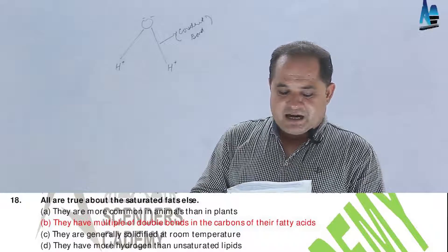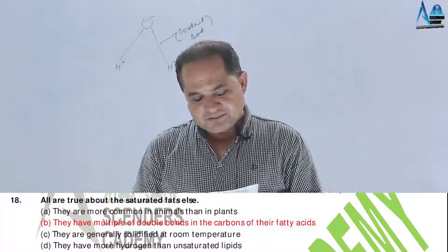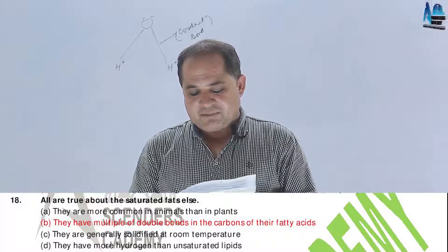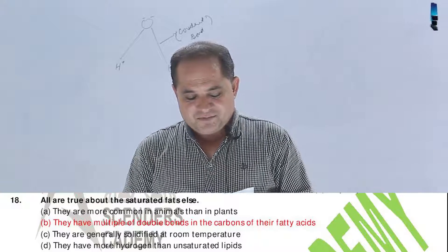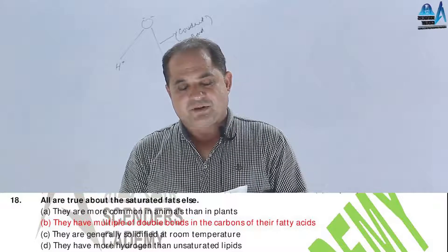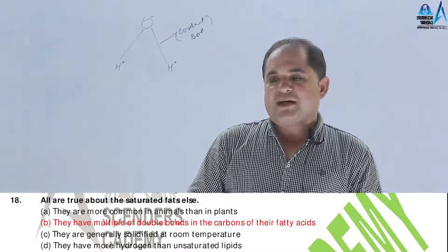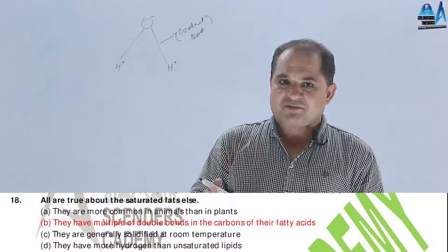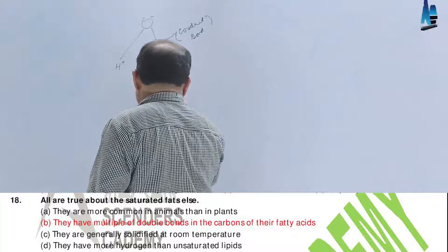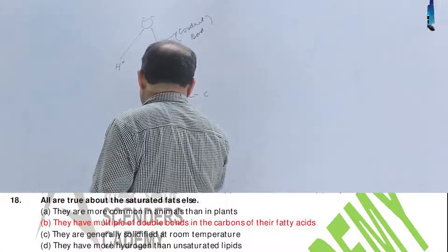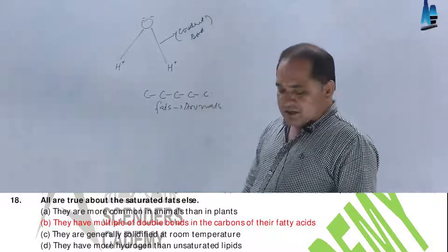Question number 18. All are true about saturated fats except: A, they are more common in animals than in plants; B, they have multiple double bonds in the carbon of their fatty acids; C, they are generally solidified at room temperature; D, they have more hydrogen bonds than unsaturated lipids. The answer should be B — saturated fatty acids have single bonds, not double bonds, and are common in animal fats.